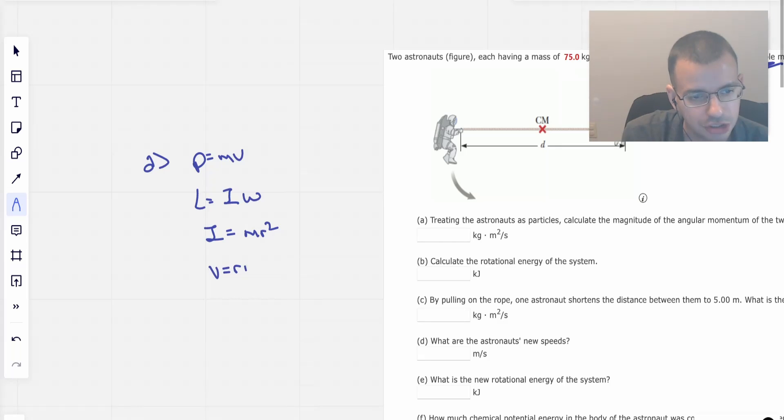Not to say that astronauts are merely particles, we're just treating them as such. Omega is v over r. Therefore, we can say that this is mr squared times v over r, which is the same as r mass times velocity.